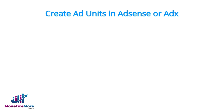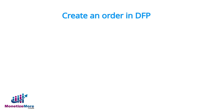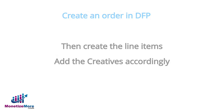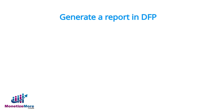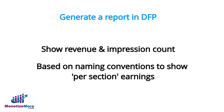We then need to create all these ad tags within our ad network, which in our example would be in AdX or AdSense — we covered that topic in an earlier video. When all our tags are ready, we then need to create an order in DFP, create the line items, and add the creatives. Lastly, you can now generate a report in DFP to show revenue and impression count based on your segmentation to show per-section earnings.